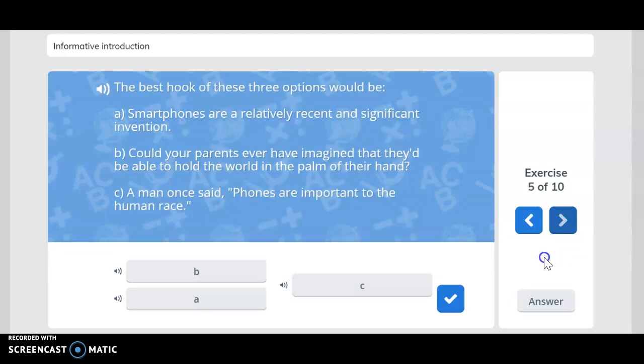The best hook of these three options would be: A) smartphones are relatively recent and significant invention, B) could your parents ever have imagined that they'd be able to hold the world in the palm of their hand, or C) a man once said phones are important to the human race. You said B. You are correct.